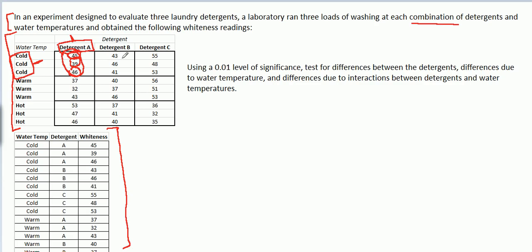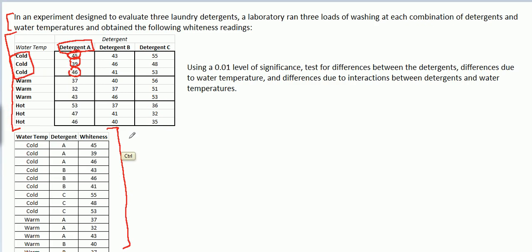Then we continue to do that for each combination of detergent and water temperature — finally, until we have detergent C and hot water temperature. We do three loads, and these are the whiteness readings from those three separate loads. That's to familiarize yourself with what this data is that we're looking at.